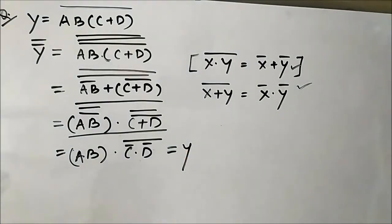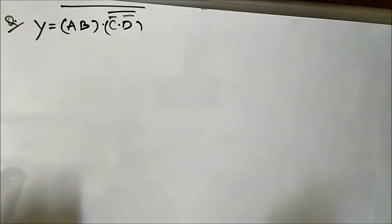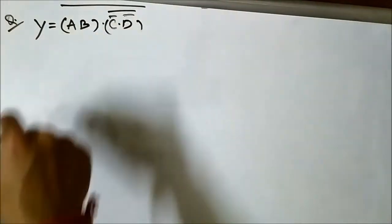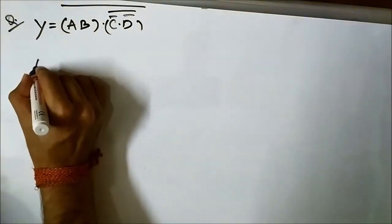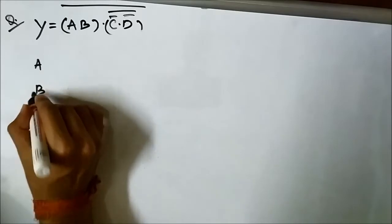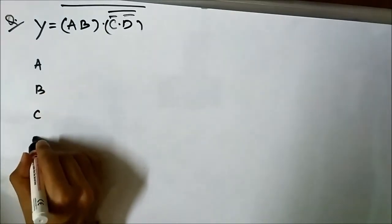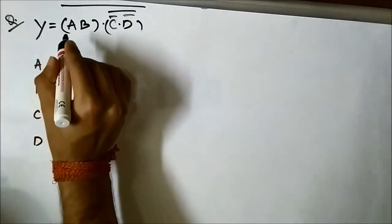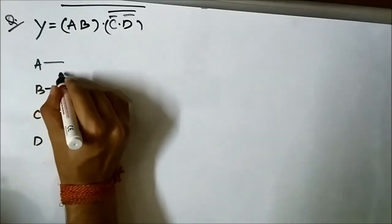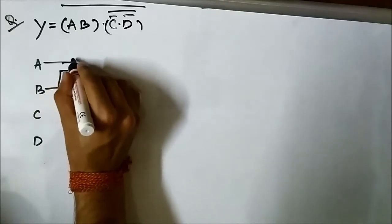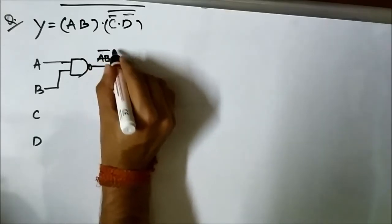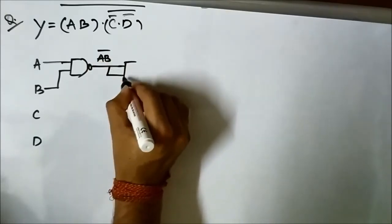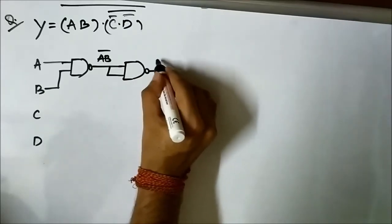Now we have to implement it using NAND gates. First let us represent the individual signals A, B, C, and D. First we require AB. When we pass A and B through a NAND gate we get AB bar. When we again pass it through another NAND gate it gets complemented again and we get AB.